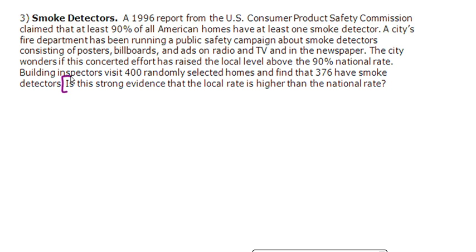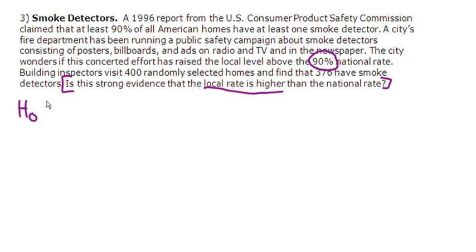So the question is asking us: is there evidence to show that the local rate is higher than the national rate? The national rate is 90%, so this is our norm. Step one is the hypotheses. The null hypothesis — H-sub-zero — represents the norm. Since we're talking about proportions and the national rate is the population, I'm going to write p equals 0.90, meaning we think the rate should be 90%.